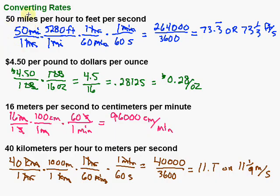So, converting rates: the first thing is to set up a ratio with your original rate. Then, creatively write 1 so that the label you don't want cancels, giving you a new label. Work your way to the labels you're interested in until they've all canceled. Then multiply straight across top and bottom, do the division, and you've got your answer. Hope this video is helpful — keep working hard on your math, I know you can do it.